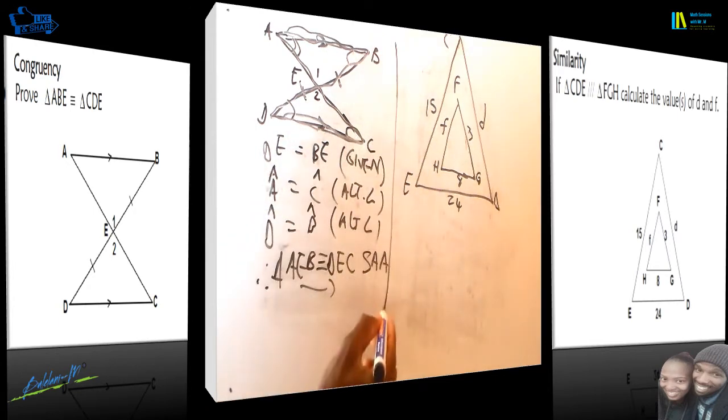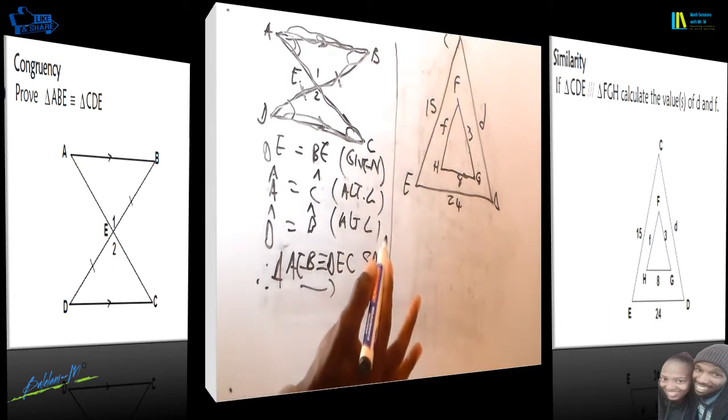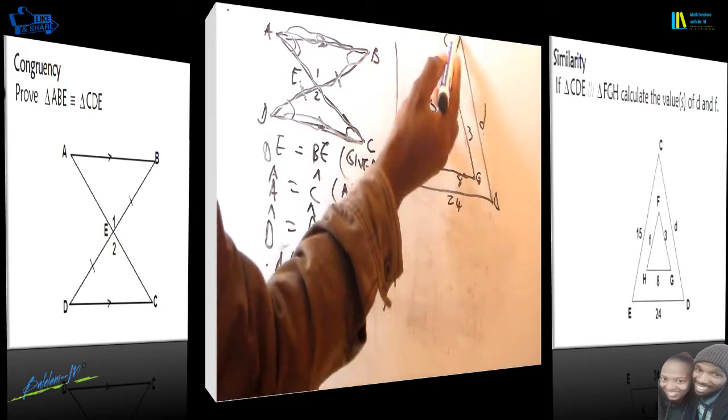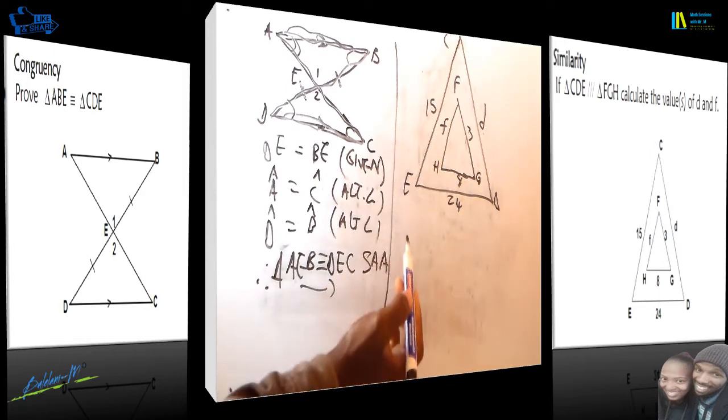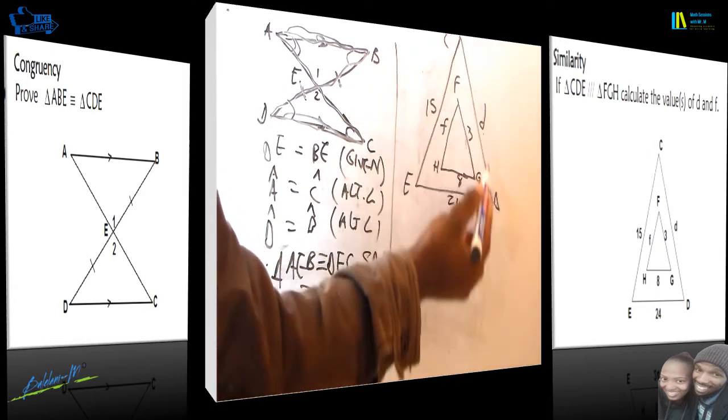Now it's a different scenario when it comes to similarity. We are working on two triangles that are similar to each other, and therefore we are told to find the unknown side which is CD (small d) and also the unknown side of FH (small f).